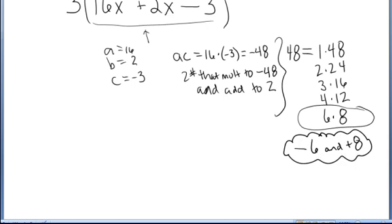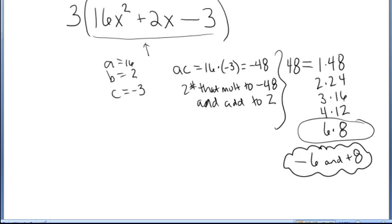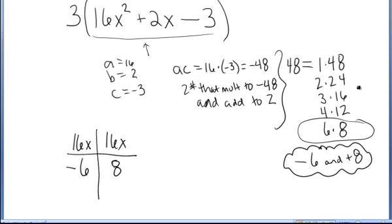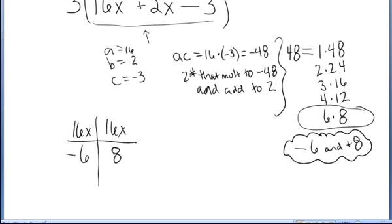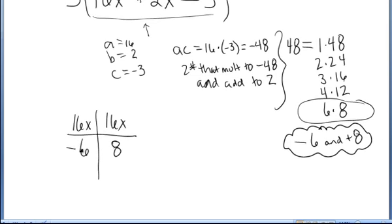Now I make my table. The original function was 16x squared plus 2x minus 3. In the top of the table I write 16x, 16x. In the bottom of the table I write the two numbers I just selected, negative 6 and 8. Now I simplify these fractions down. 16x over negative 6: I can pull a 2 out of both, leaving 8x and negative 3. So one of the factors is 8x minus 3.